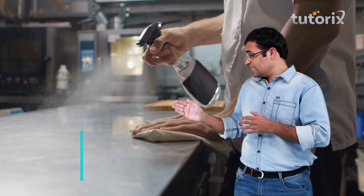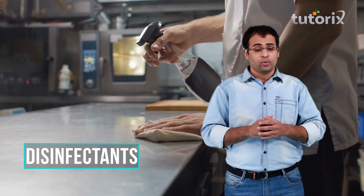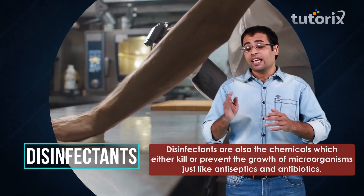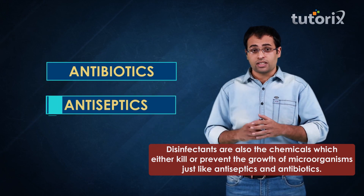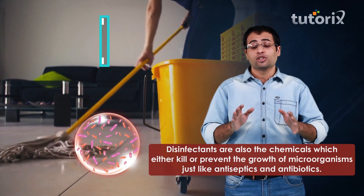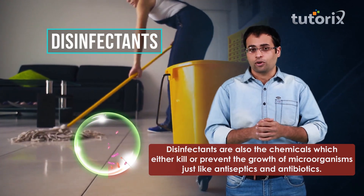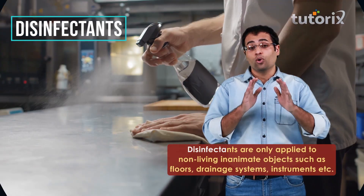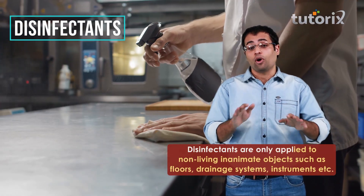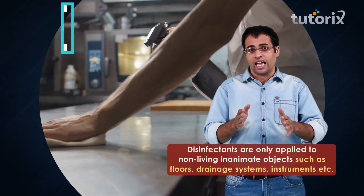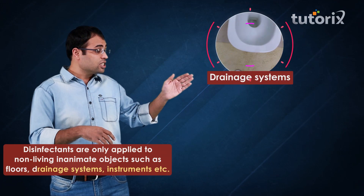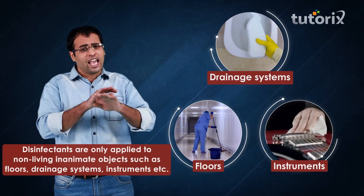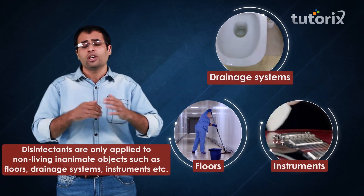Now let's move on to the next class of antimicrobial drugs, namely disinfectants. Disinfectants too, like antibiotics and antiseptics, are chemicals which kill or inhibit the growth of microorganisms. However these disinfectants can only be applied on non-living inanimate objects like drainage systems, floors, instruments, or any other non-living object.